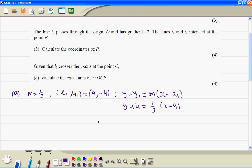If we multiply by 3, we get 3y plus 12 equal to x minus 9. Take everything to the right side. We get x minus 3y minus 21 is equal to 0.